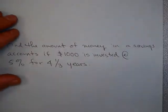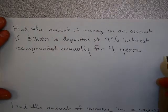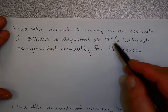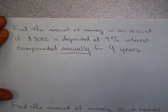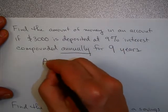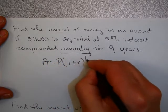Let's look at some simple examples. Find the amount of money in an account if $3,000 is deposited at 9% interest compounded annually for 9 years. Well, compounded annually, I'll go back and look at that formula, is this right here.